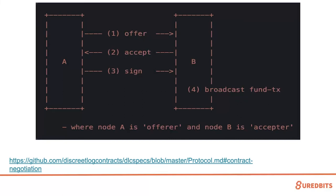We do still use ECDSA adapter signatures rather than Schnorr. We wanted to get this stuff out and not be waiting on Taproot, because at the time we didn't know when Taproot was going to get activated. I can follow up and send links to that code. The funding process is very much the same as Lightning — Lightning has to exchange funding signatures as well — though we do some different things like those adapter signatures.